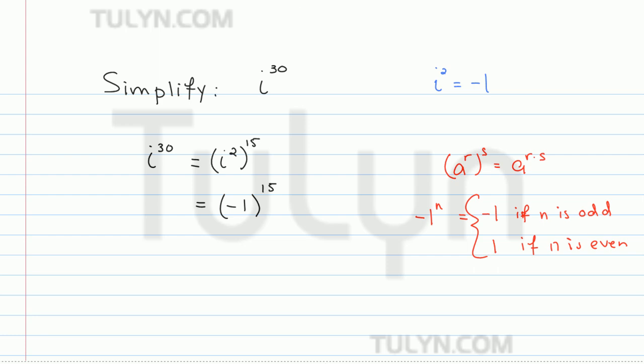So since 15 is an odd number, negative 1 to the 15th power is just going to be negative 1.